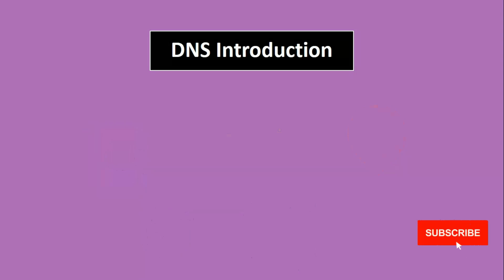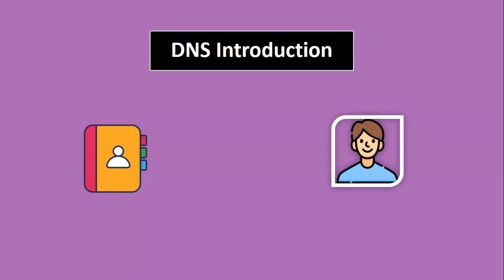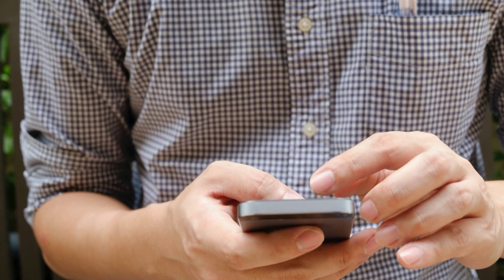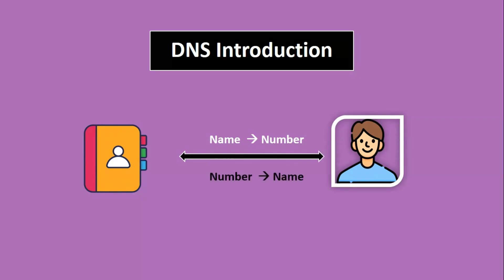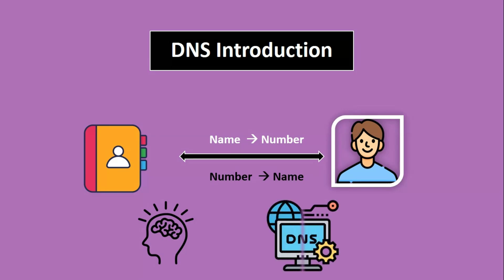Before going technical, here is a non-technical example to understand DNS. Consider a contact list or phone book with a name like David. Using a contact list, we can find a telephone number from a name. If you know someone's name but not their number, you look it up in the phone book. Same way, just as a contact list translates names to telephone numbers, DNS provides the same service on the internet — when visiting google.com or facebook.com, our computer uses DNS to retrieve the website's IP address, then our browser loads the website.